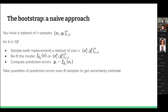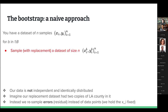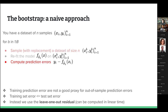The naive version of the bootstrap works like this: you have a dataset of XY samples — observed counties with demographic covariates and vote counts — N of them. For B bootstrap samples, you sample with replacement on the dataset to generate synthetic samples, refit your model for each of the B bootstrap samples, compute a prediction interval, then take the quantiles of that prediction interval. We use a slightly different version to account for the fact that our data is not independent and identically distributed.